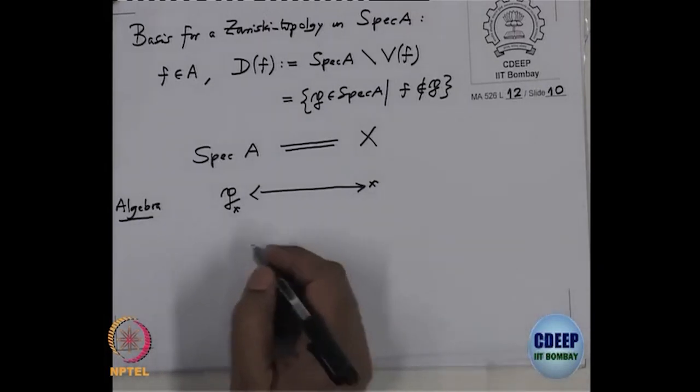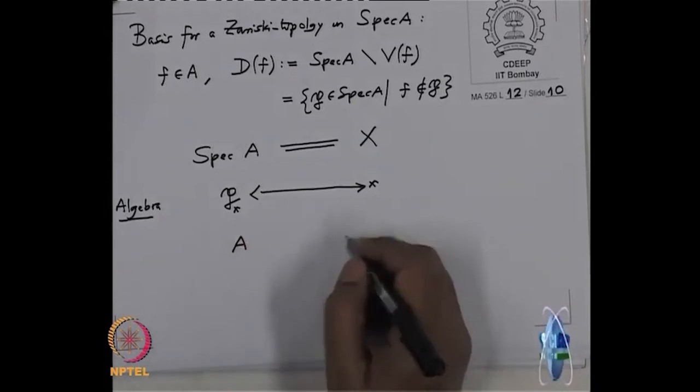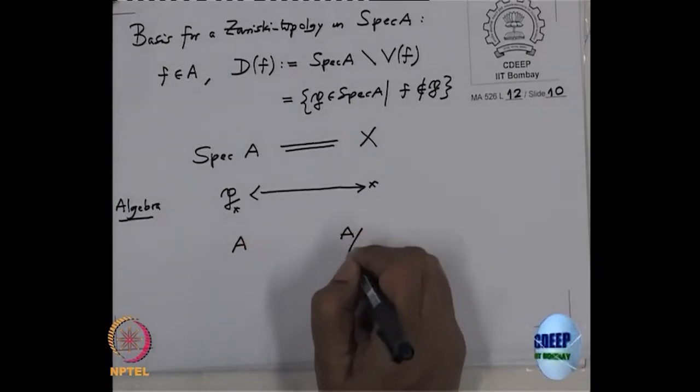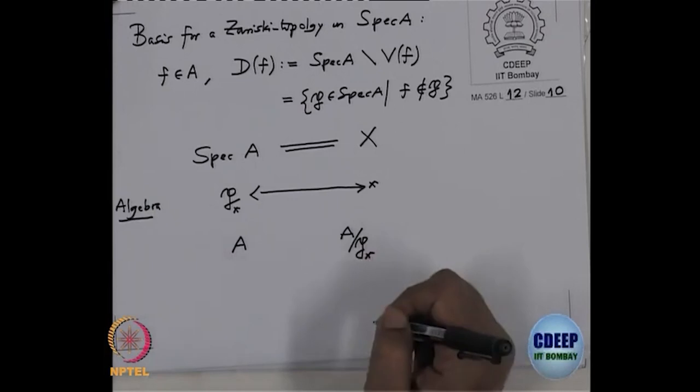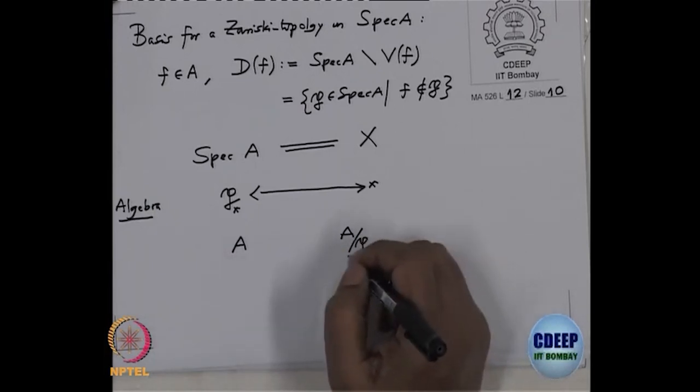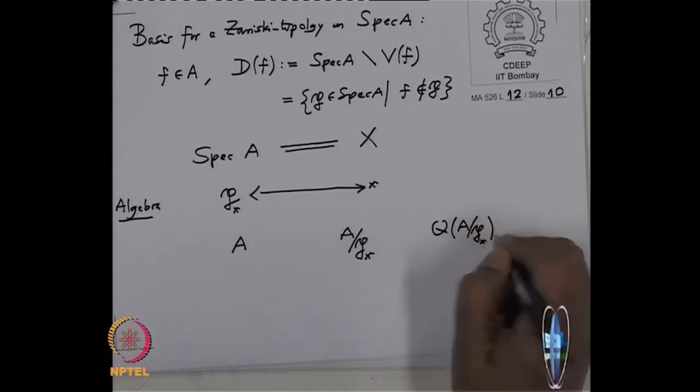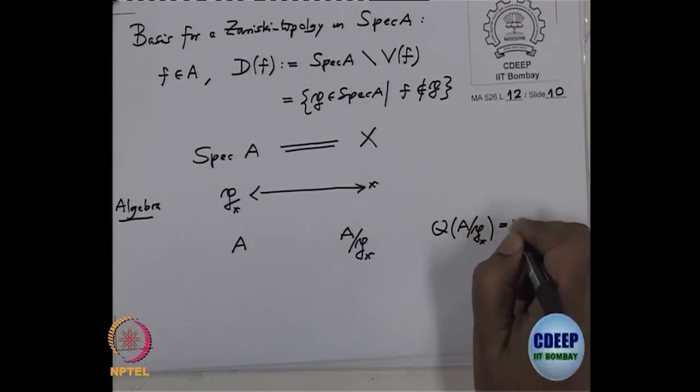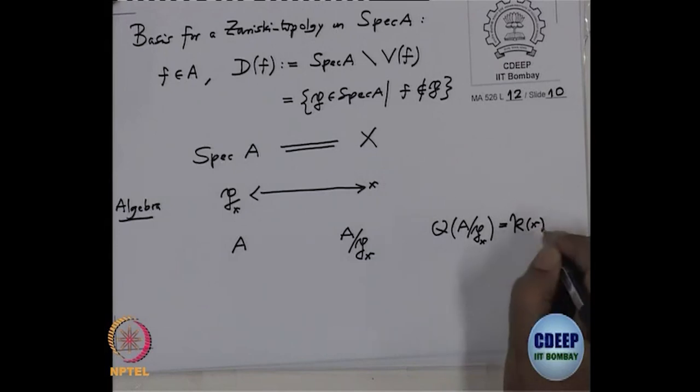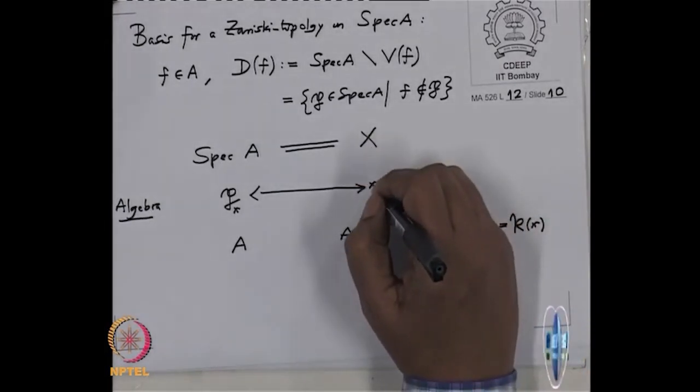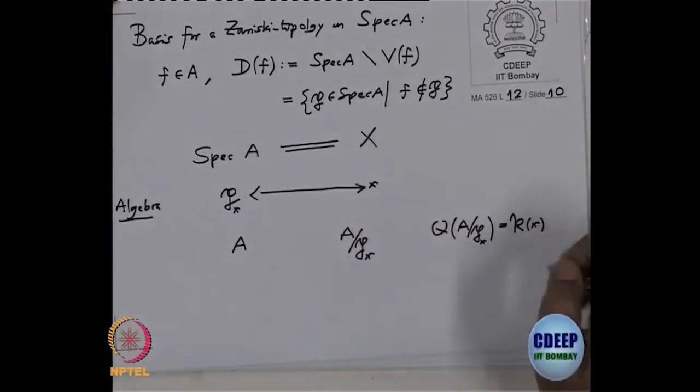Now what happens? Now we have this ring A. We have A mod P_X. Now this is an integral domain. So it has a quotient field. So that quotient field in algebra notation is this. That I want to denote by, there is no field anywhere. This is a field. So that field I want to denote by kappa(X). It only depends on X. And so when you think of topological space and X, this is a field attached to that point. It's called a residue field at that point.